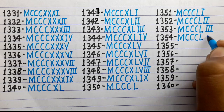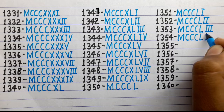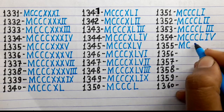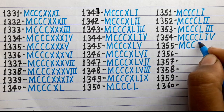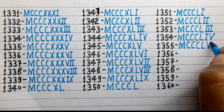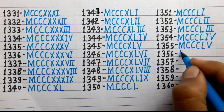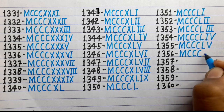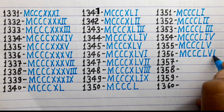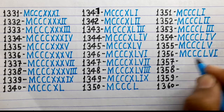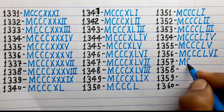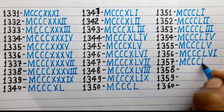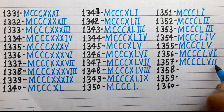1354 is MCCCLIV. 1355 is MCCCLV. 1356 is MCCCLVI. 1357 is MCCCLVII.